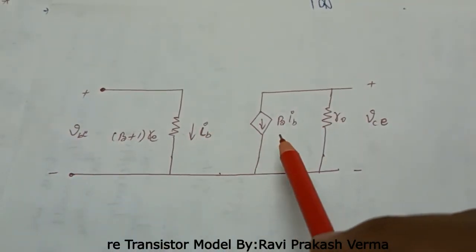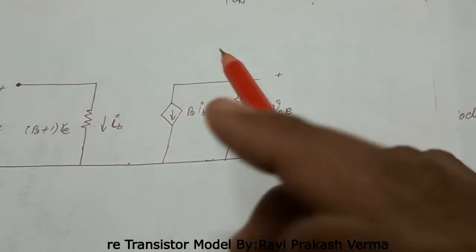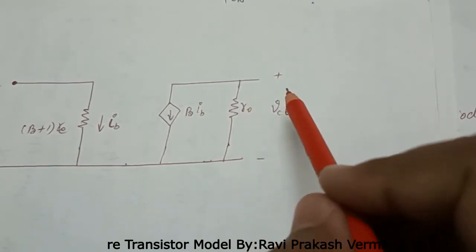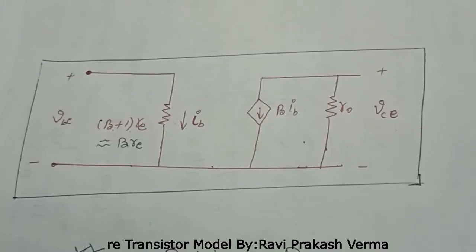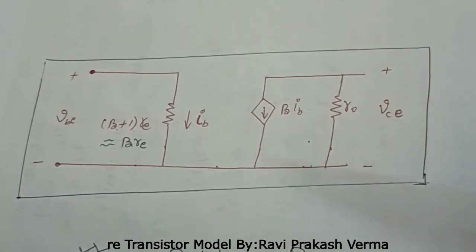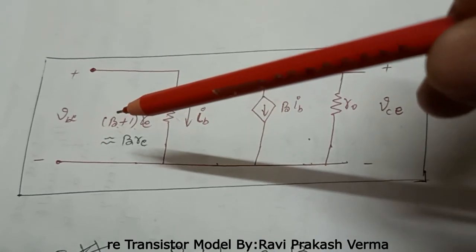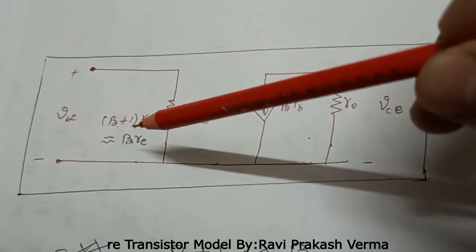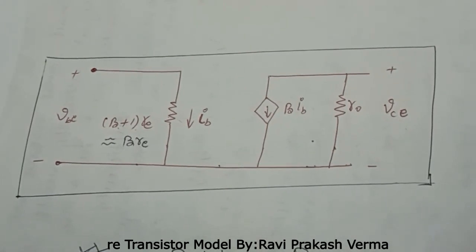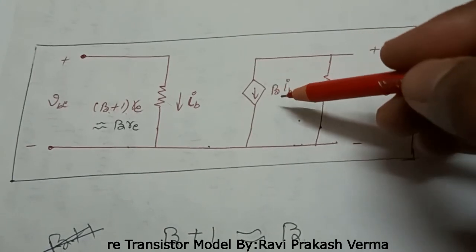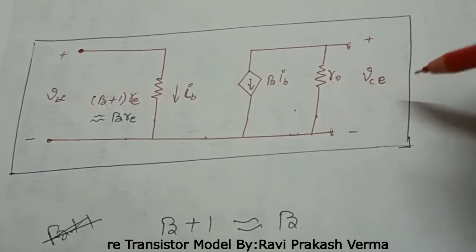The voltage across this equivalent resistance is VBE, and the dependent current source in the output has the value beta·IB with output resistance RO. The voltage across RO is VCE (collector-to-emitter voltage). This is the final RE model circuit for the common emitter configuration, with the input side and output side clearly separated. The input resistance value is (beta + 1)·RE, and since beta is much larger than 1, this can be approximated as beta·RE. Thank you guys.